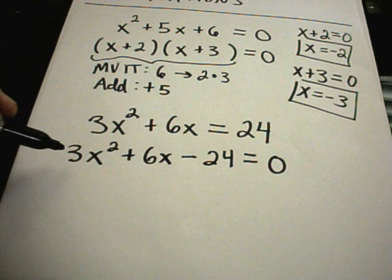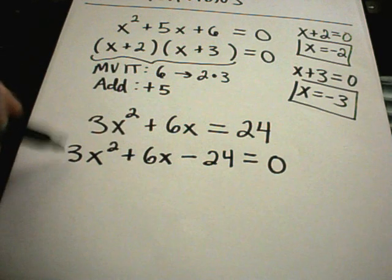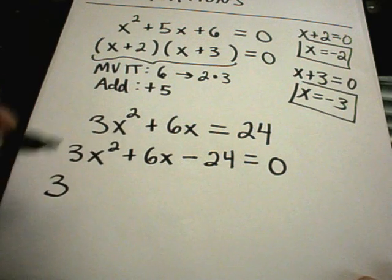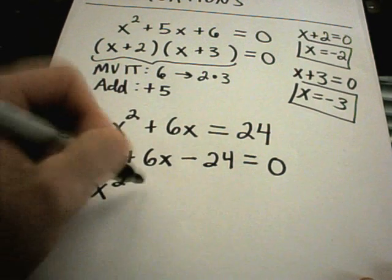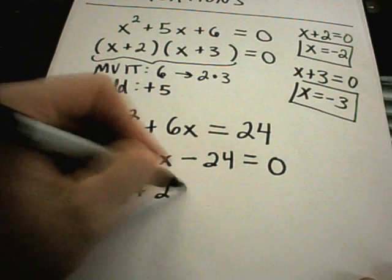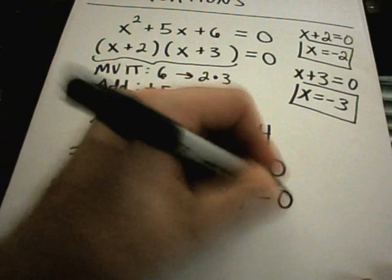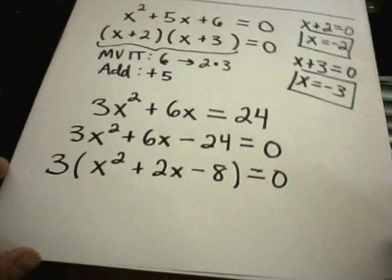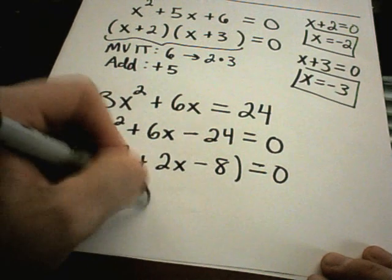The first thing you'll always want to do when factoring is think, is there anything in common that I can factor out? Notice there's a 3, a 6, and a 24. I can take a 3 out of there because 3 will go into all of those numbers. Then I'll need an x squared, a plus 2x, and a minus 8 back on the inside. Just like my last problem, I'm now going to try to factor down the x squared plus 2x minus 8 term.